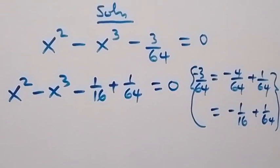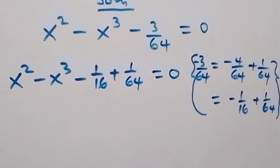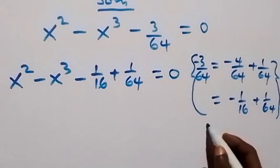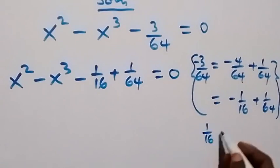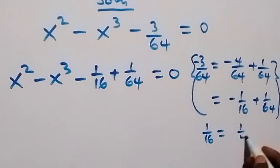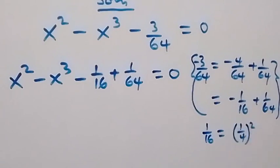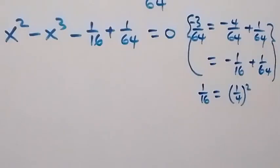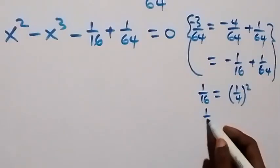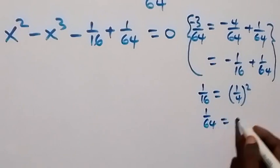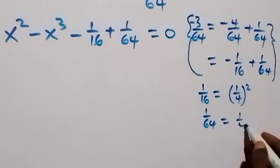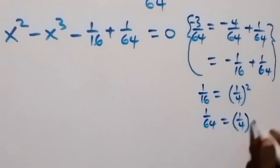In the next step, we can equally write 1 over 16 as 1 over 4 all squared. And also 1 over 64 we can write it as 1 over 4 all raised to power 3.